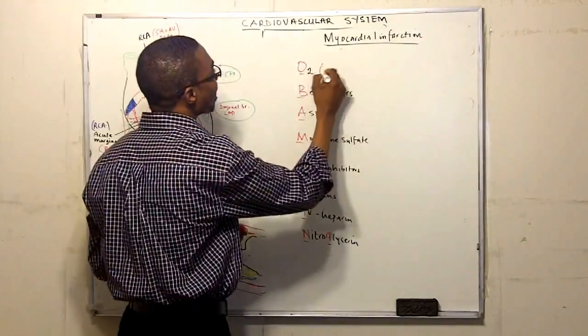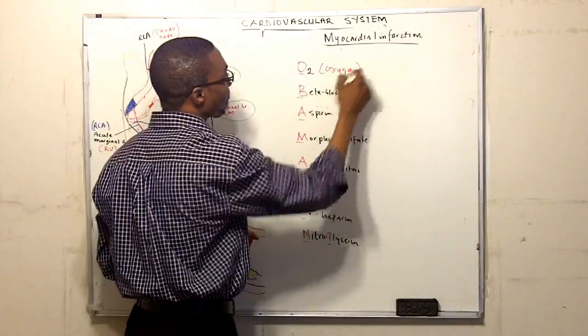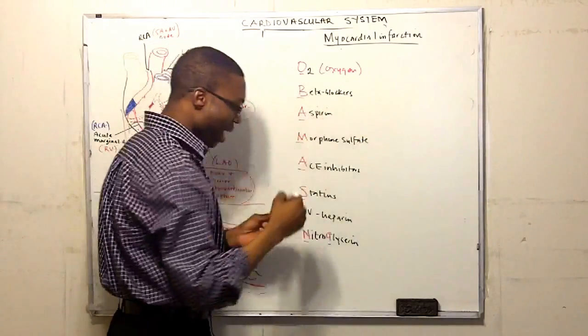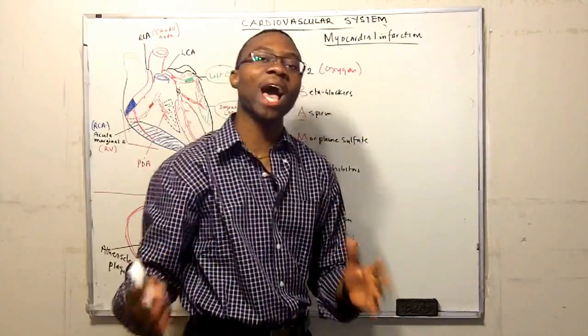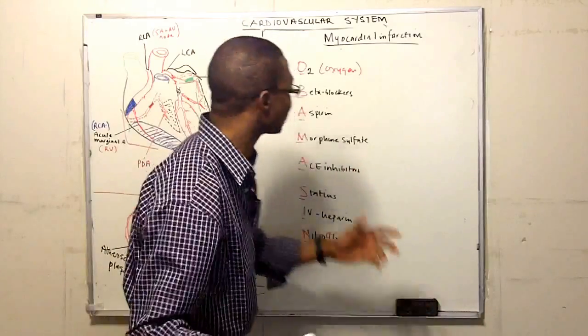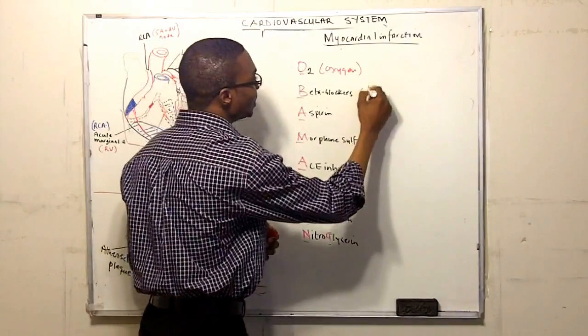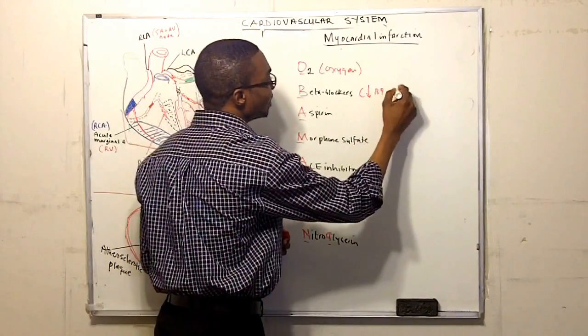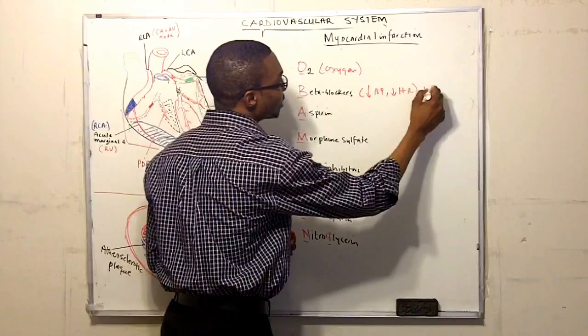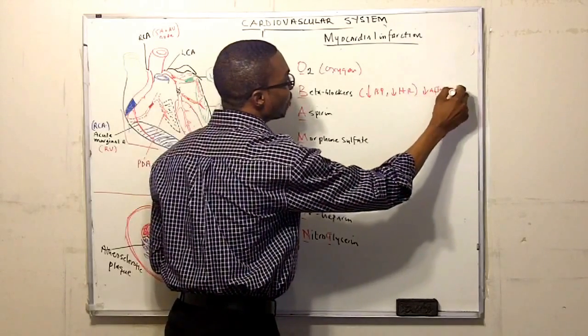So the first thing we want to give them is oxygen. Beta blockers, remember beta blockers decrease mortality, very important. Beta blockers is going to decrease their blood pressure, decrease their heart rate, decrease their afterload.